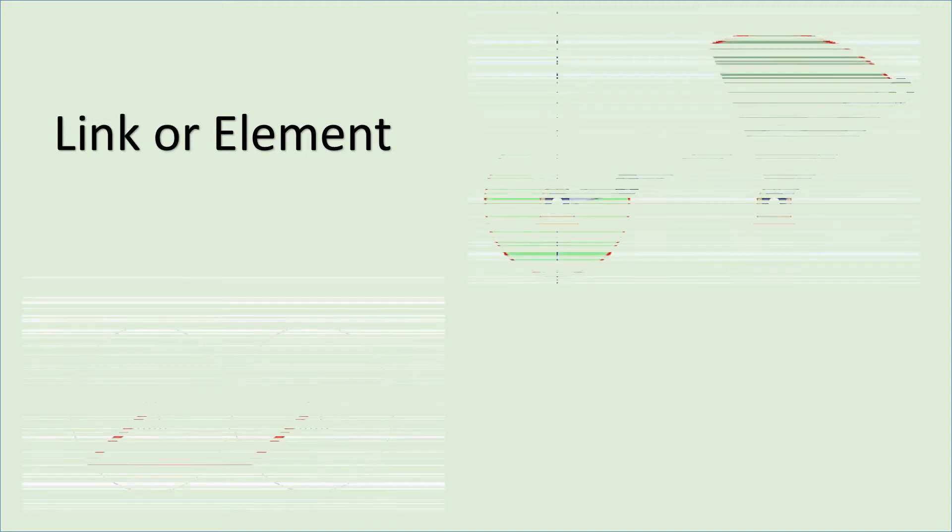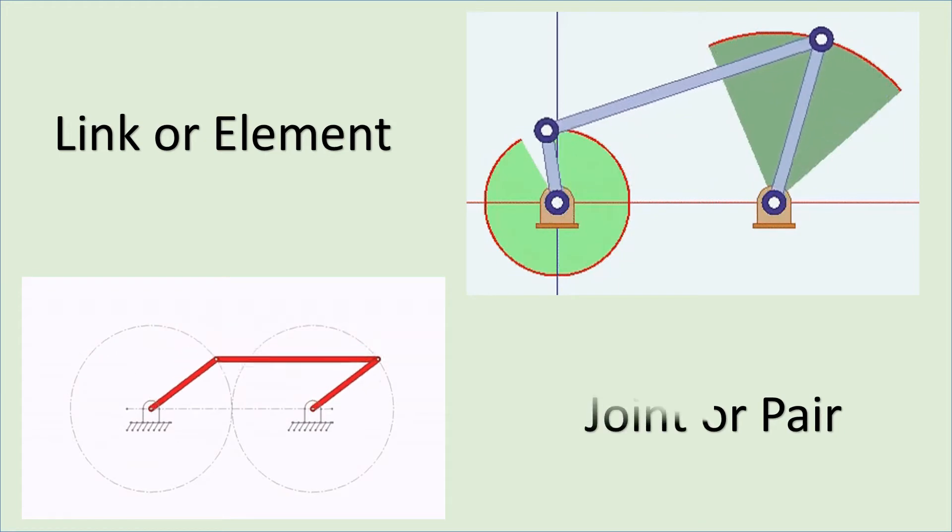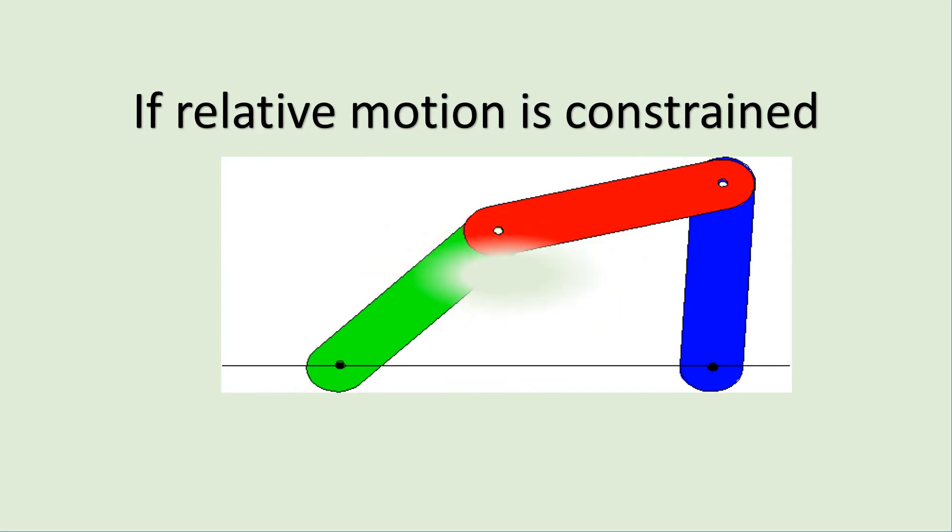The connection between two links is always a joint or a pair, but this pair will always be a kinematic pair if the relative motion between the links is a constrained motion.